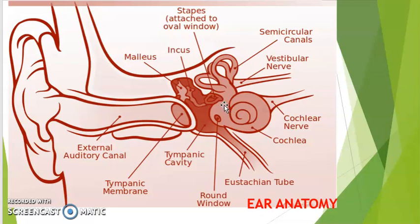The tympanic membrane is larger in area when compared with the base of the stapes at the oval window. So the force, when transmitted from the tympanic membrane to the oval window, gets concentrated in a very tiny area and thus the pressure gets increased. Pressure is force divided by area, so when the same force is acting upon a smaller area, the pressure gets increased.